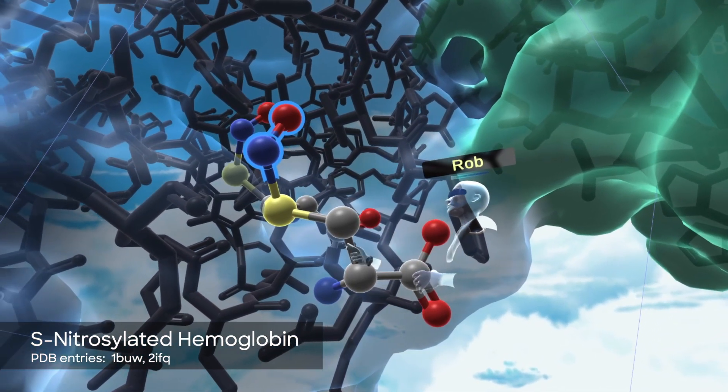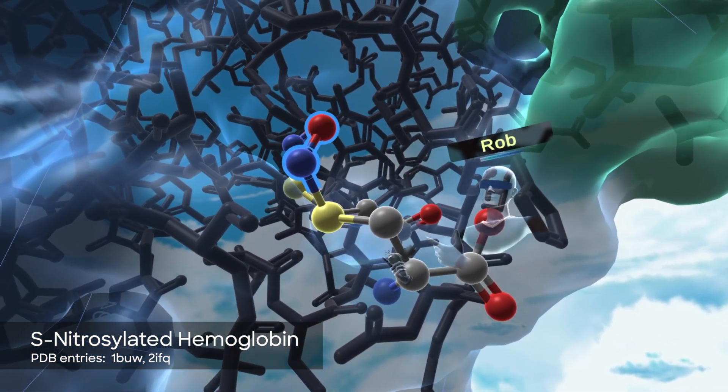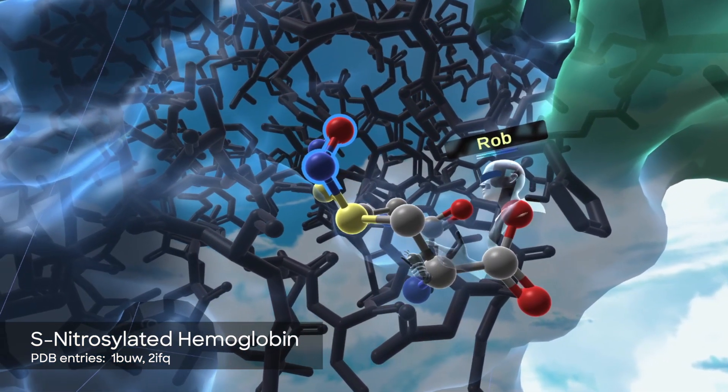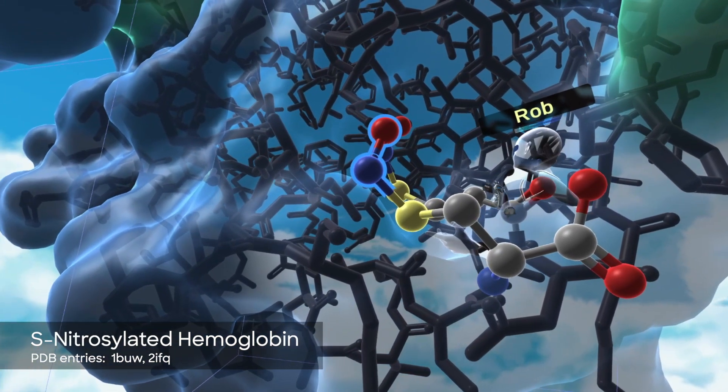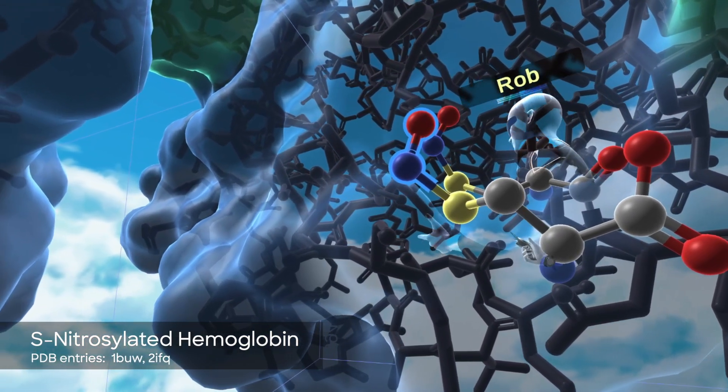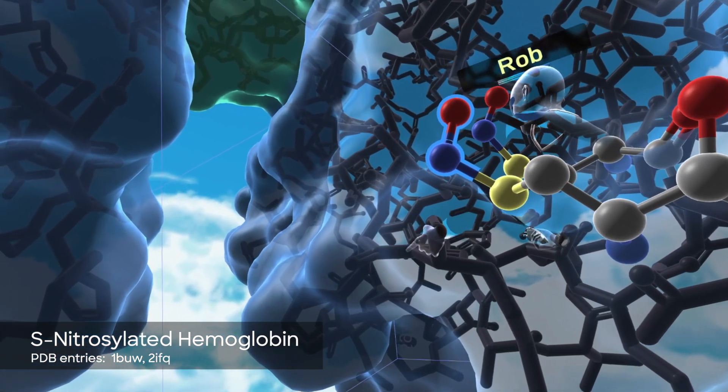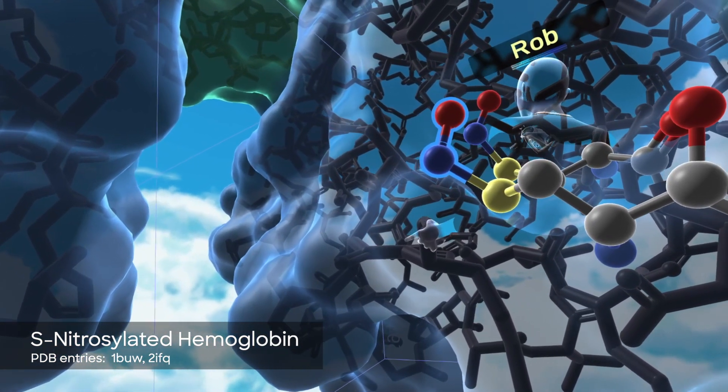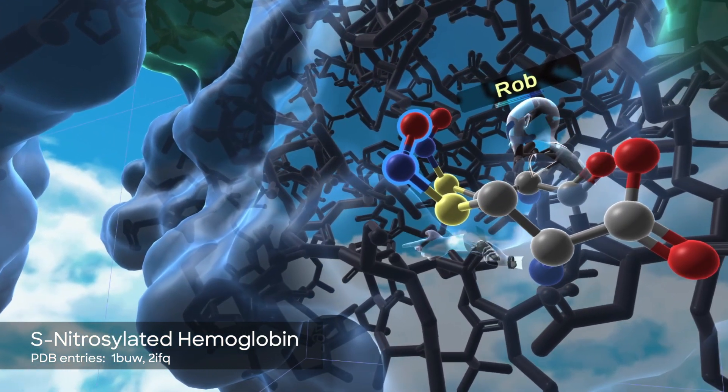Nitric oxide is a vasodilator. It helps regulate the size of your blood vessels. So when hemoglobin is in its oxygenated form, nitric oxide binds favorably to these cysteine residues in the beta chains of hemoglobin. But when hemoglobin becomes deoxygenated, nitric oxide molecules here tend to come off and then they're released into the bloodstream.